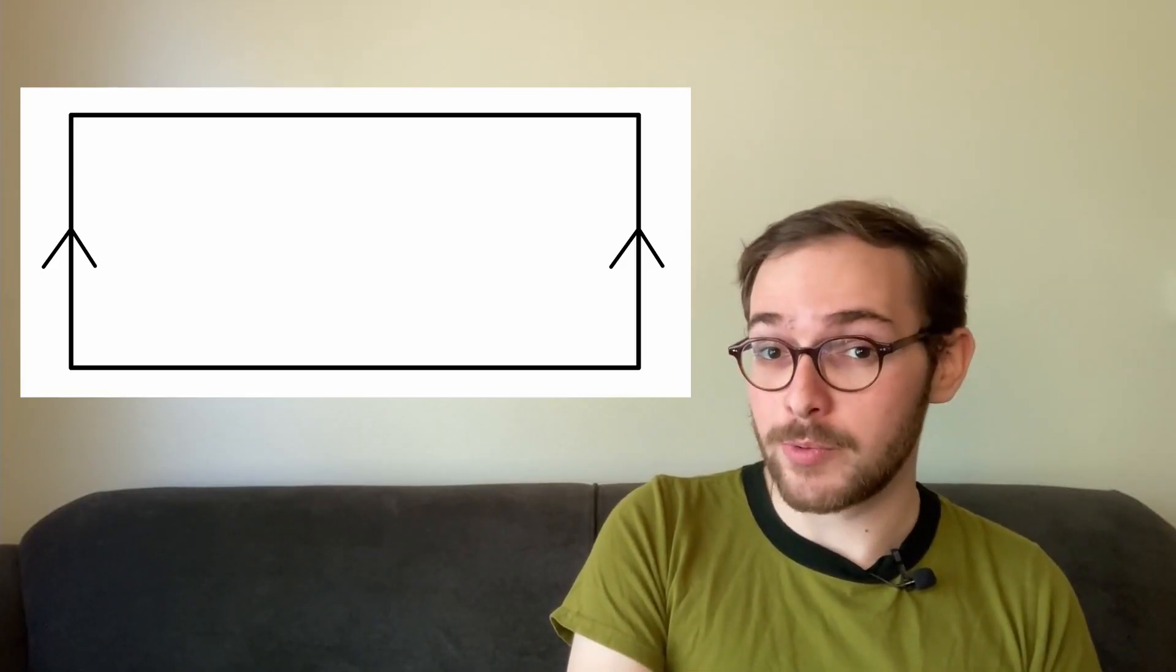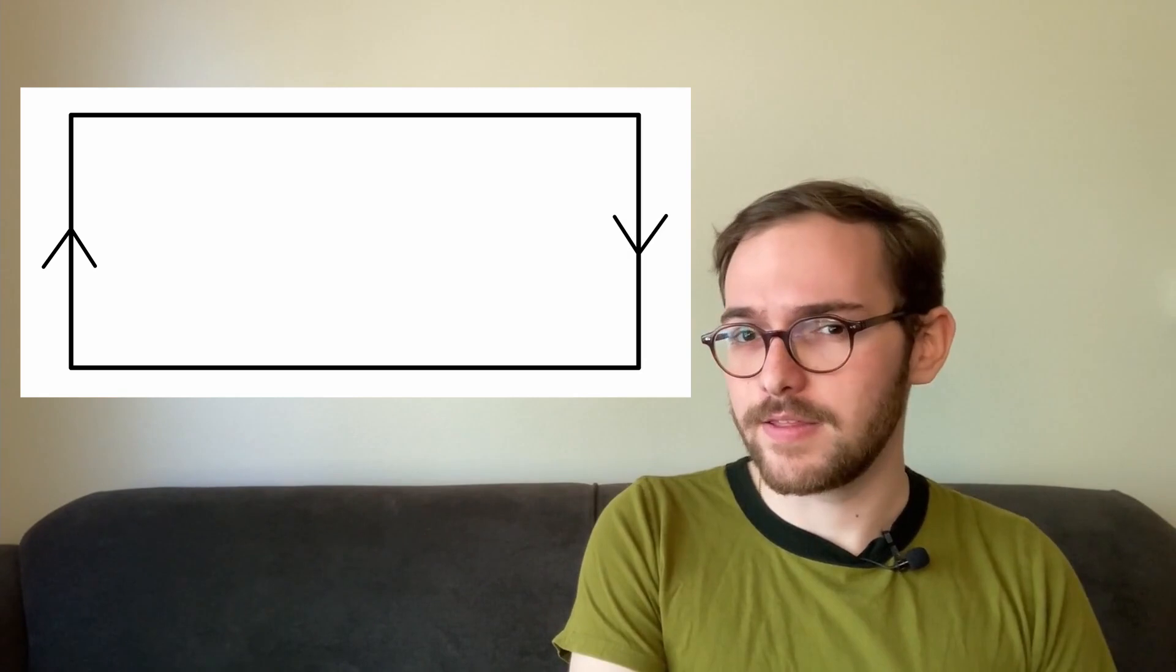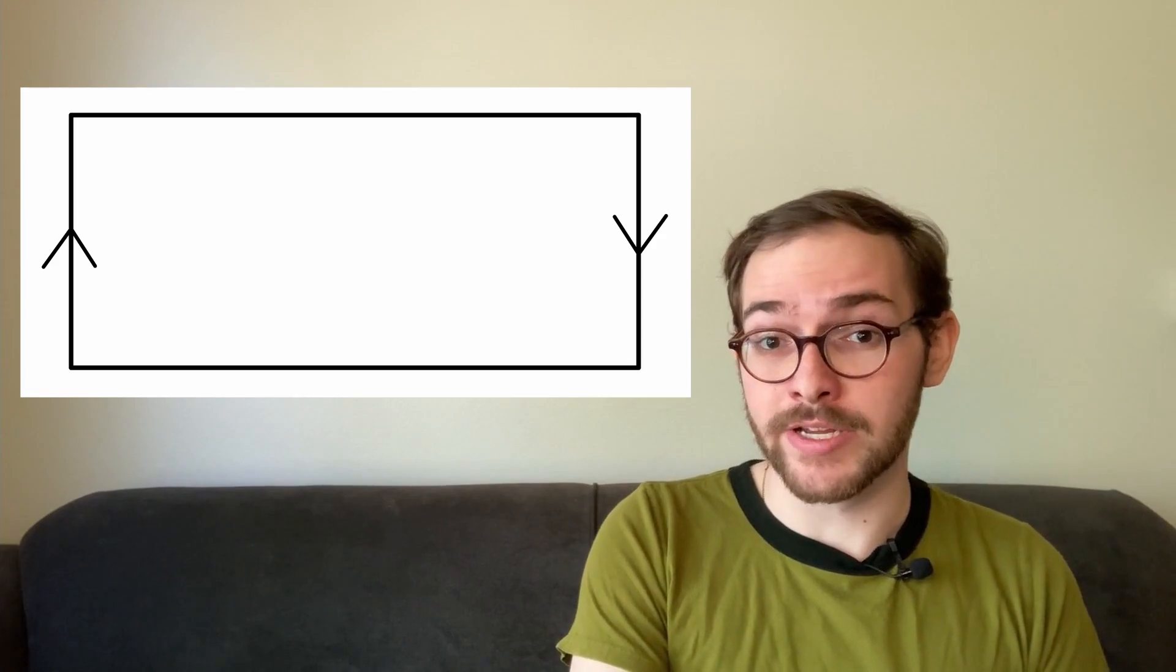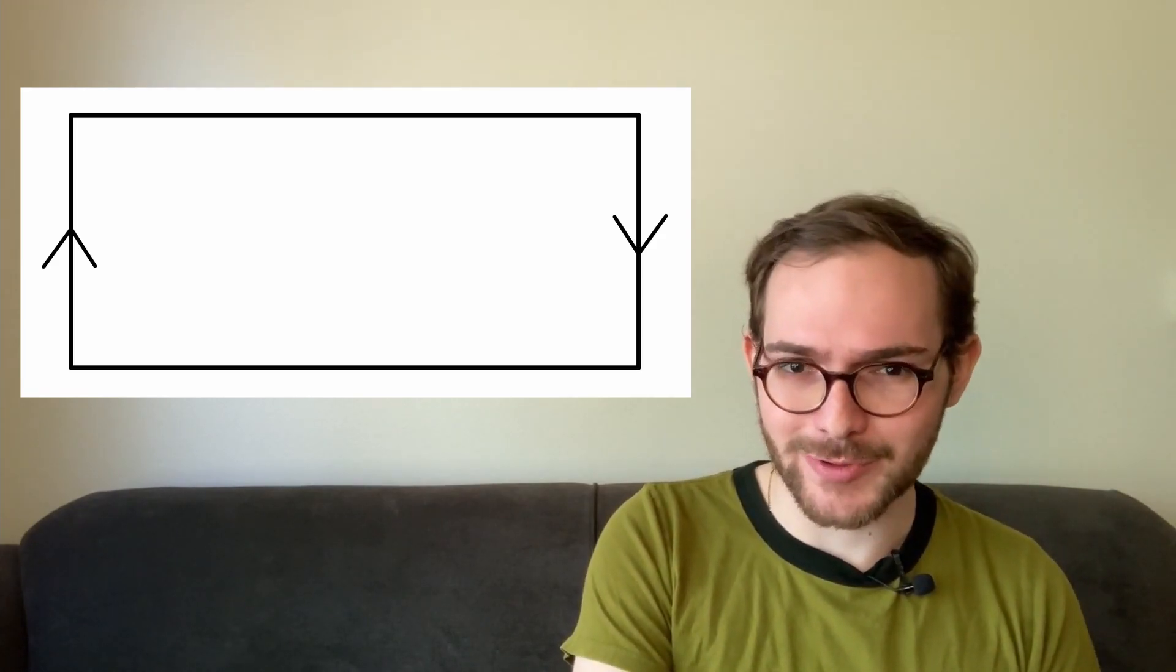A normal loop would have been drawn like this. These diagrams are convenient because they let us think about Mobius strips in a two-dimensional way, which is much easier to visualize.